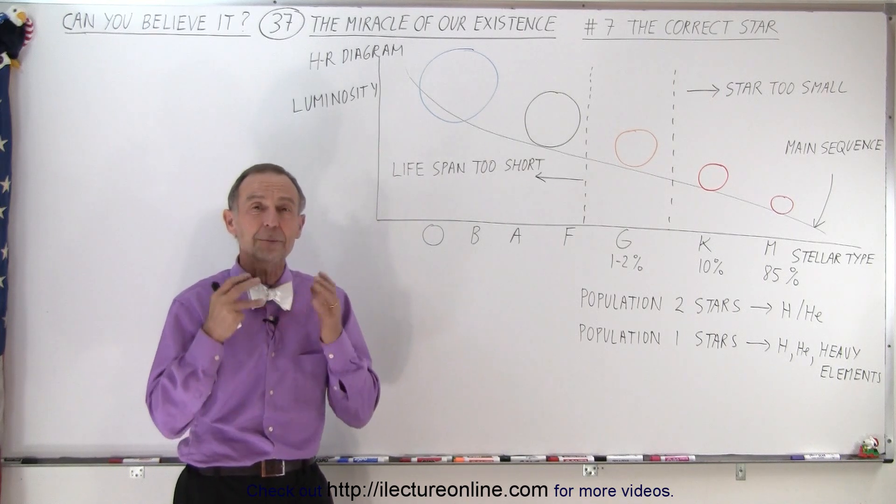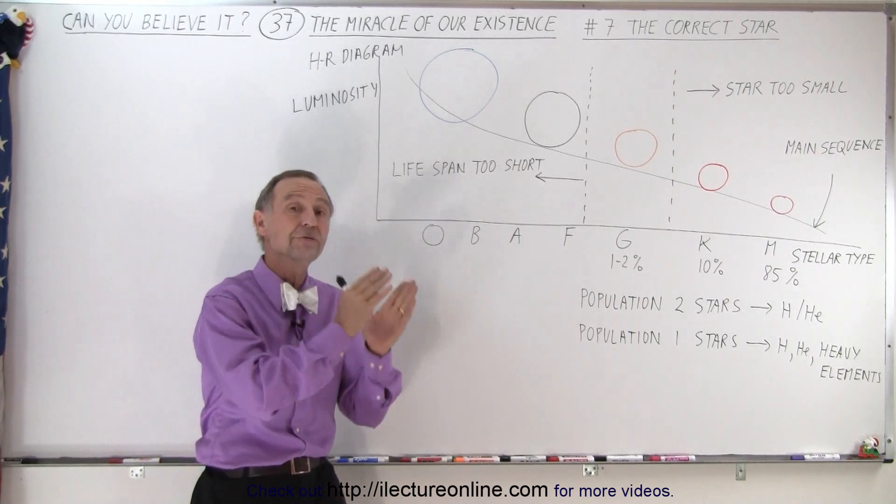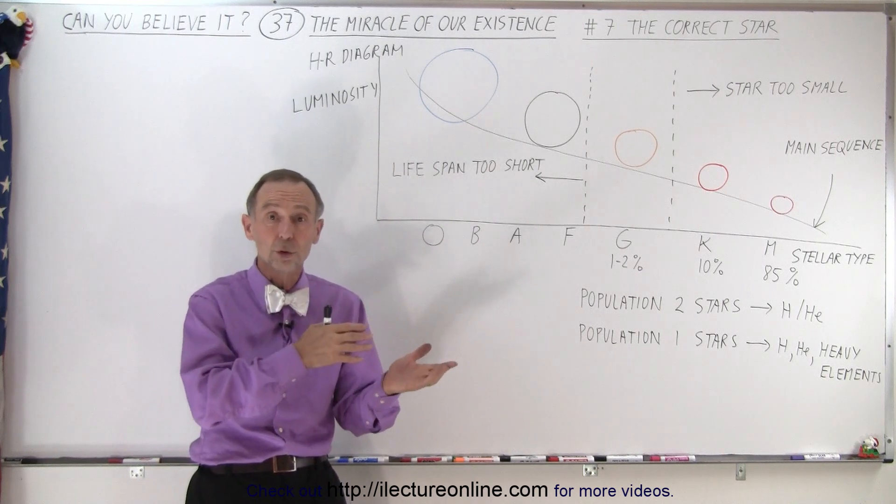Then you need to have a planet that is located in the Goldilocks zone, in the right location, not too far away, not too close to the star, otherwise it will be too cold or too hot.